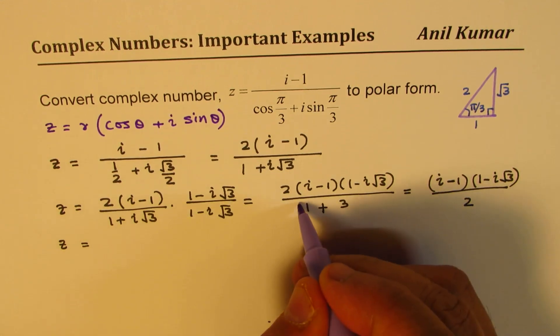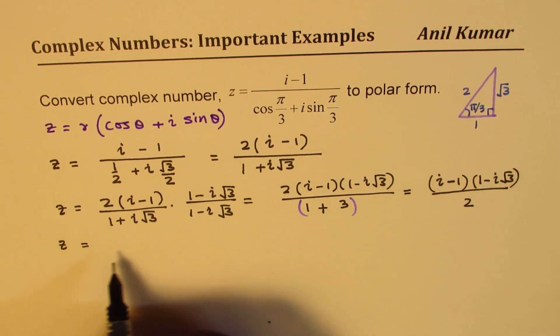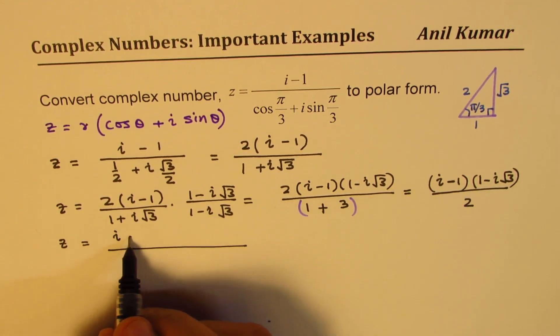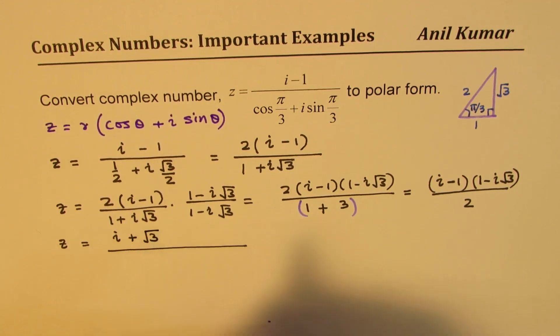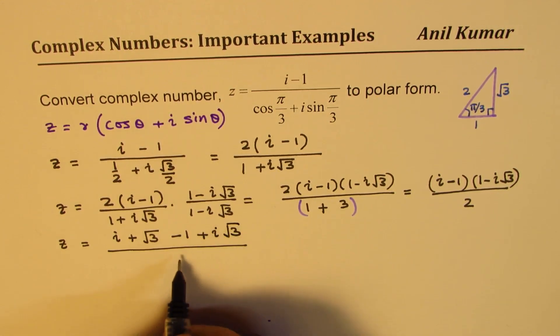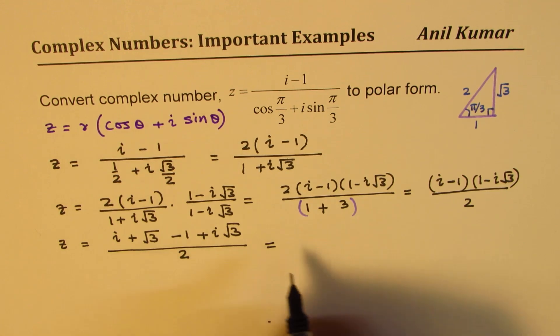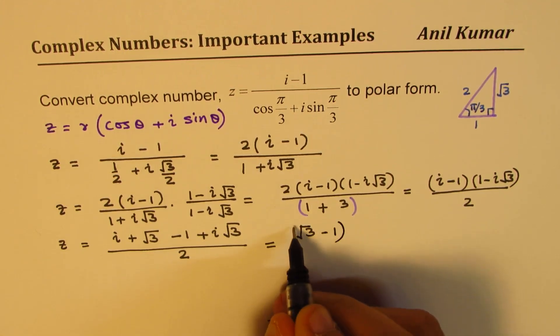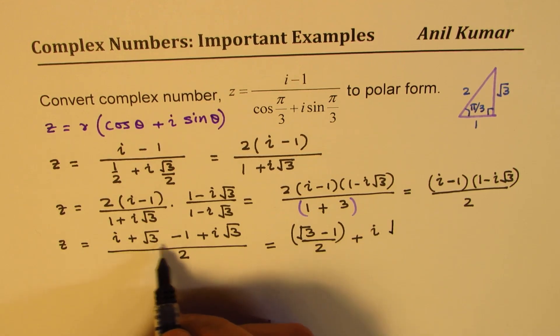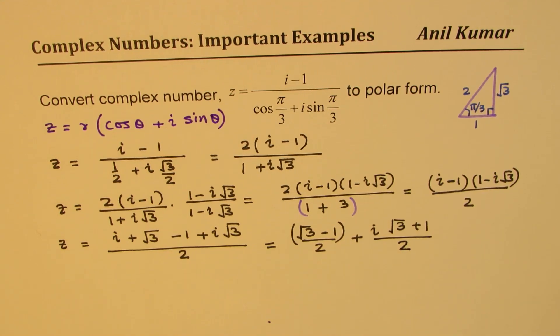So let's expand this now. In the numerator, we have i minus i² which makes it plus √3, multiplying by -1 gives us -1 and plus i√3 over 2. Now combine the like terms. So the real part here is (√3 minus 1)/2 plus the imaginary part, which is (√3 plus 1)/2. So that becomes the complex number.